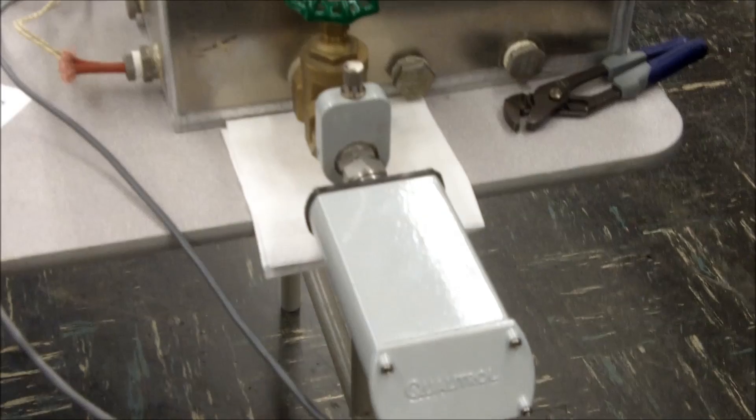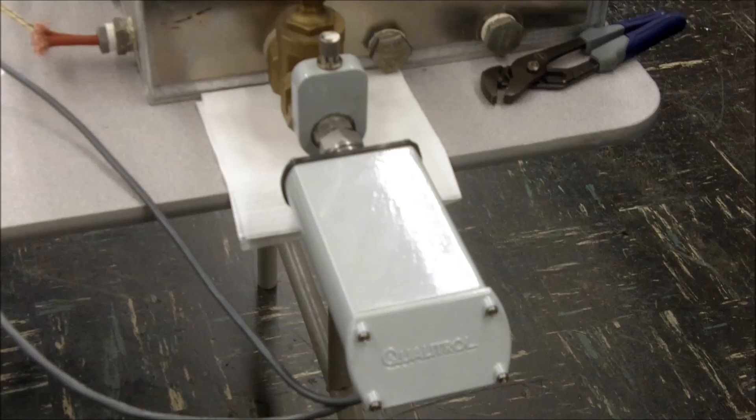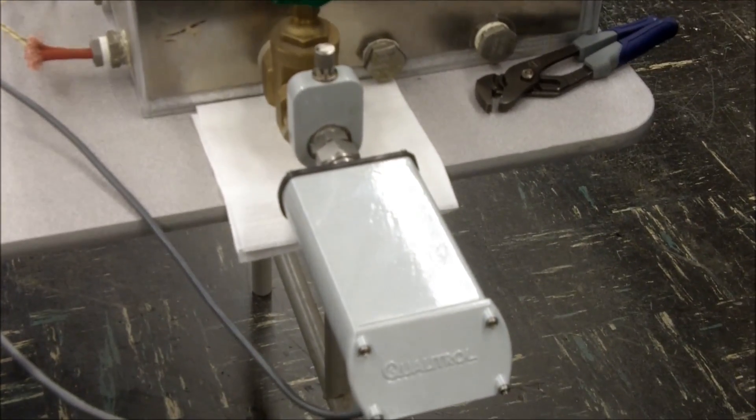You see here a DGA model 150. All the Qualitrol units are equipped with a sampling valve. They're designed for ease of use and sampling and operate in the same manner.